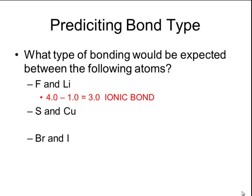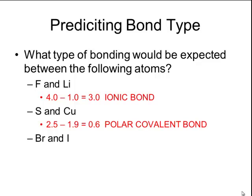Now let's take a look at sulfur and copper. Sulfur has an electronegativity of 2.5 and copper has an electronegativity of 1.9. The difference between these two numbers is 0.6, which falls within the range of a polar covalent bond — between 0.4 and 1.7. This means the electrons are not going to be equally shared; they will hang out a little bit more around the sulfur because it has the higher electronegativity.